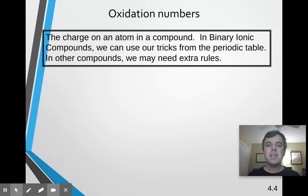Now, for binary ionic compounds, that means if we just got two things in the compound, two elements, we can just use our tricks from the periodic table. Like if it's in group 1, it's plus 1. Group 2 is plus 2. Then the halogens are minus 1. And group 16 is minus 2. And group 15 is probably minus 3.